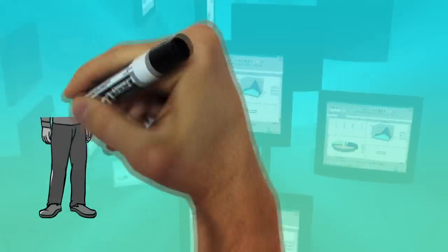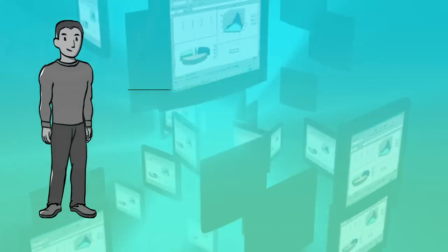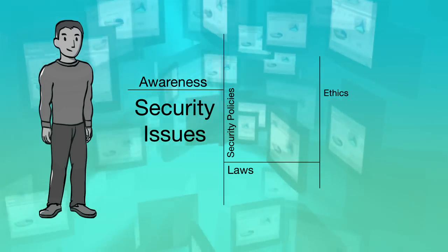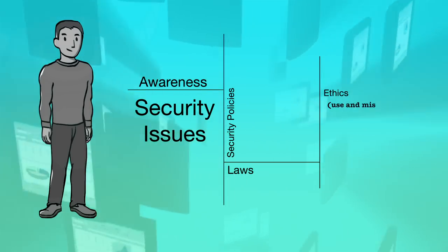In this information age, every individual should have good awareness about security issues, the security policies of their organization, and the laws related to information security. People should also be aware of ethical issues concerning the use and misuse of information systems. As information systems are technology-driven, people should have the necessary technical exposure to security systems and technologies. Every organization should have a security policy that reflects management's commitment to provide a secure information system while protecting the privacy of individuals. Policy should also indicate management's approach to introducing new technologies and training employees on information security.